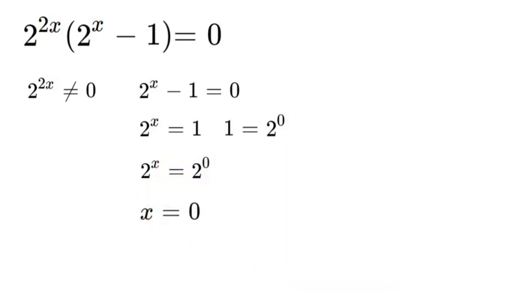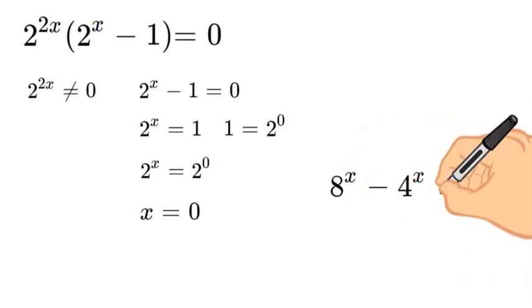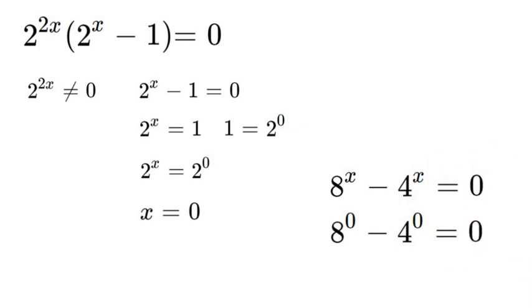And that is the answer. Let's go ahead and test that real quick. So we got our equation 8 to the power of x minus 4 to the x equals 0. Throw 0 in there. And since anything to the power of 0 is 1, we'll have 1 minus 1 which equals 0. So thanks for watching.